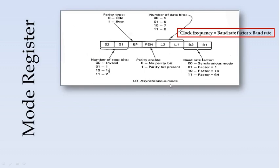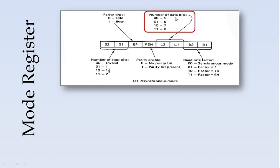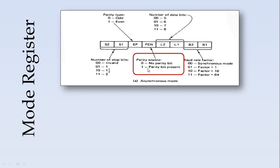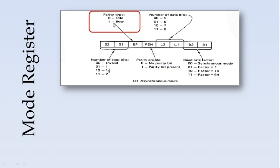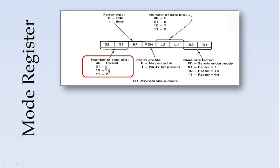In the mode register for asynchronous mode, bits B2 and B1 indicate the baud rate factor, where the clock frequency equals the baud rate factor times the baud rate. The combination 00 indicates synchronous mode; 01 means factor is 1, 10 means factor is 16, and 11 means factor is 64. The next two bits represent the length of the data bits, which can be five to seven bits. A bit indicates whether parity is enabled — 1 indicates parity is present — and if parity is present, another bit indicates whether it is odd or even parity. The last bits indicate the number of stop bits: 00 is invalid, while the other combinations select one, one-and-a-half, or two stop bits in asynchronous mode.